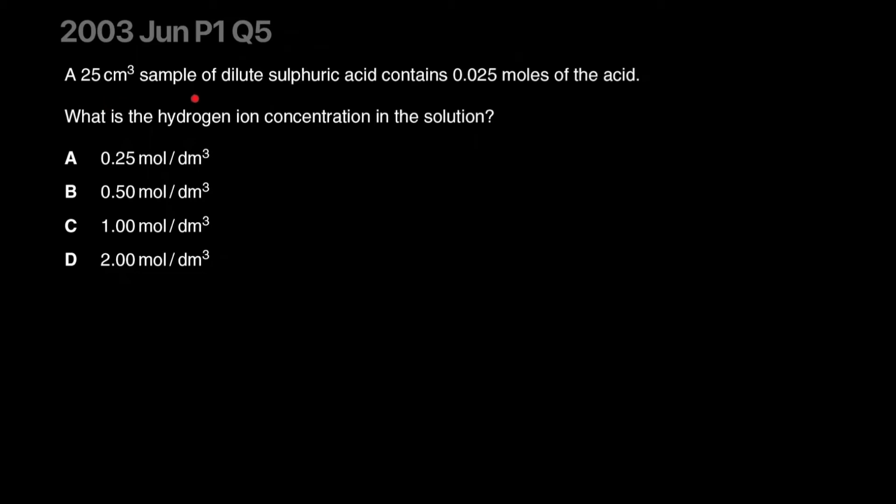A 25 centimeter cube sample of dilute sulfuric acid contains 0.025 moles of the acid. They're just giving us the moles. What is the hydrogen ion concentration in the solution? That's an interesting question. So sulfuric acid, when it is added to water, will form ions. How many hydrogen ions will it produce? Each molecule of sulfuric acid produces two hydrogen ions and one sulfate ion.